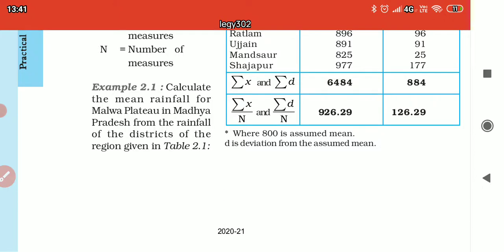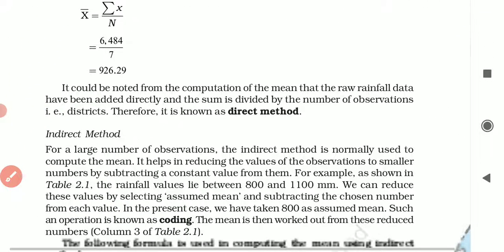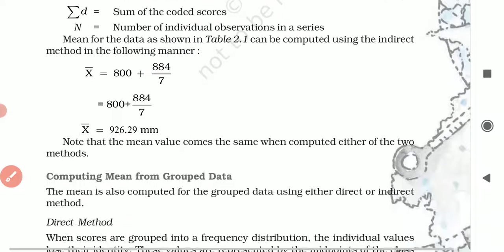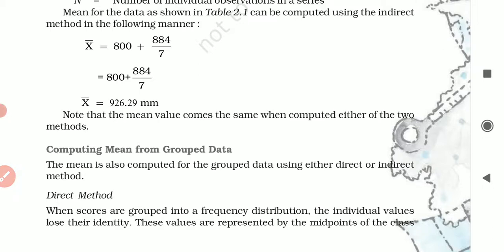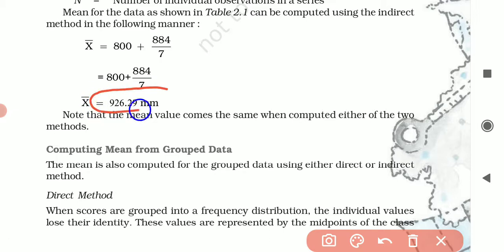Our sum of deviations is 884. Now what we do according to our formula: 800 plus 884 divided by 7. When we calculate it, the mean value is 926.29 mm.